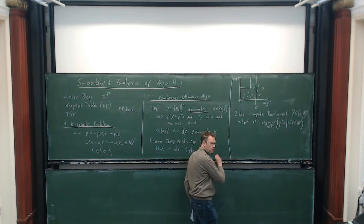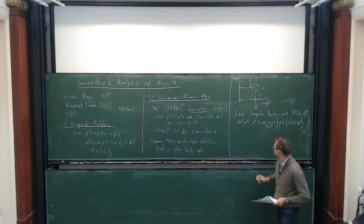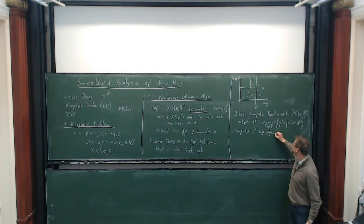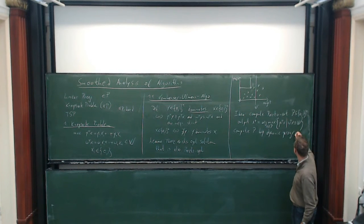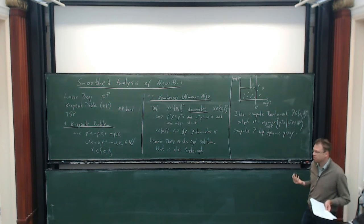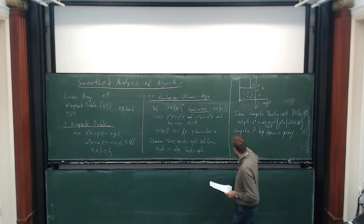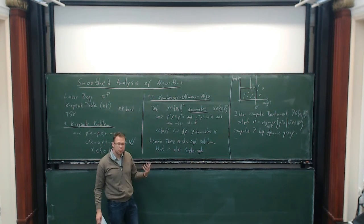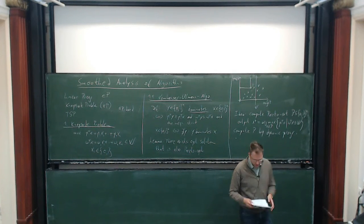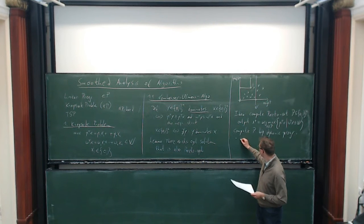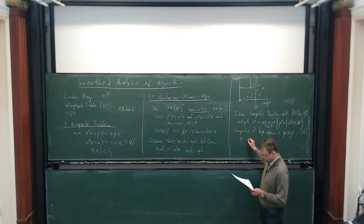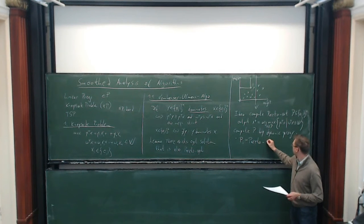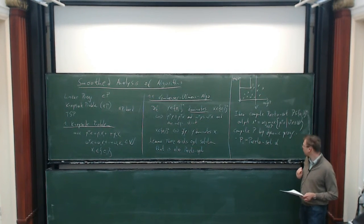The only thing that remains is to compute the set P efficiently, and this is what we do by dynamic programming. The subproblems are indexed by i, where i goes from 0 to n. In subproblem i, only the first i items are available. I denote by P_i the Pareto set of the instance that consists only of the first i items.